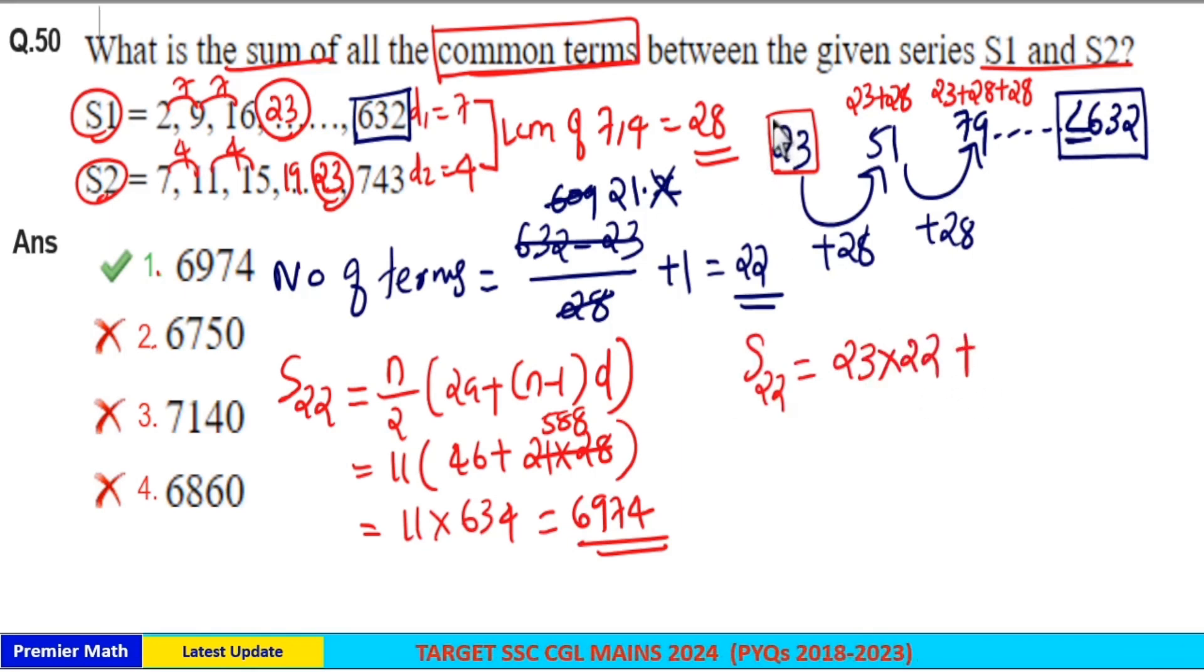Now we can ignore this first term. Remaining is 28 repeated 1 time, 28 repeated 2 times, 28 repeated 3 times, etc., up to 28 repeated 21 times.